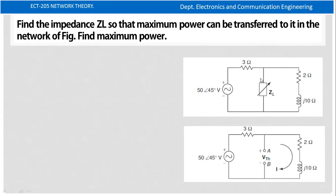Let us convert the circuit to its Thevenin equivalent first. We need to find Vth. The Vth value involves 2 plus j10 multiplied by the current. So 2 plus j10 gives the Vth value.